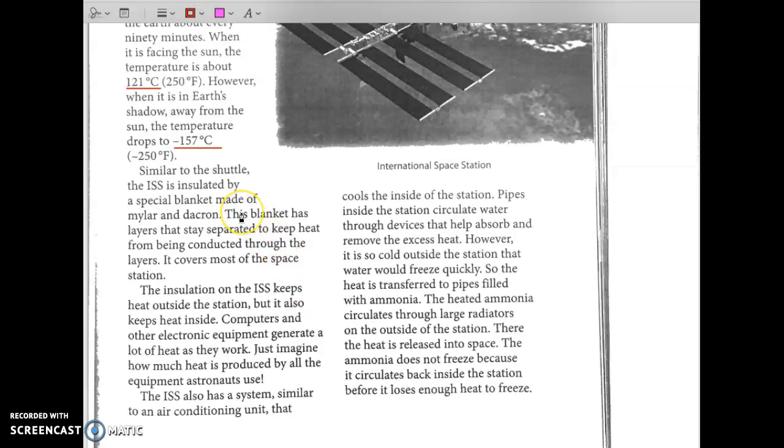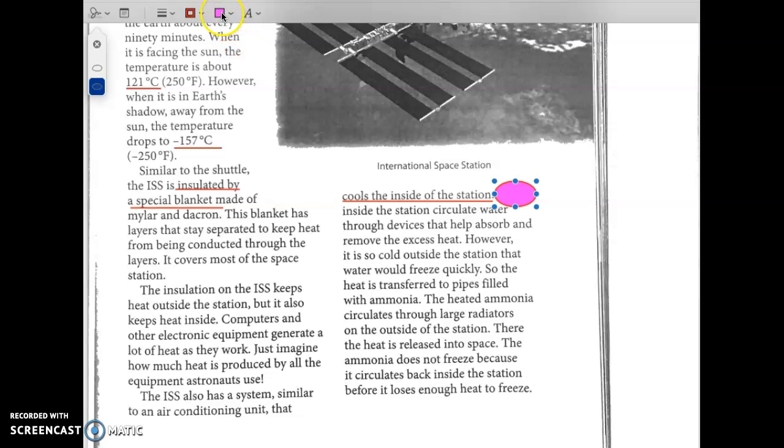Similar to the shuttle, the ISS is insulated by a special blanket made of Mylar and Dacron. This blanket has layers that stay separated to keep heat from being conducted through the layers. It covers most of the space station. The insulation on the ISS keeps heat outside the station, but it also keeps heat inside. Computers and other electronic equipment generate a lot of heat as they work, as we know. Just imagine how much heat is produced by all the equipment astronauts use.